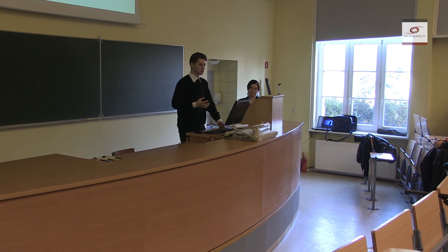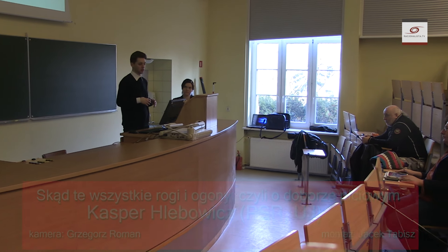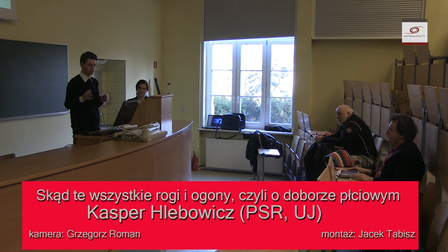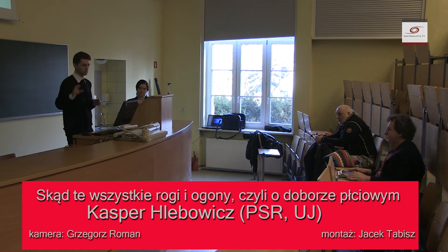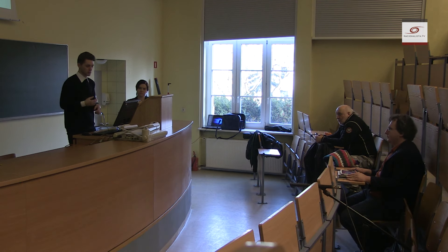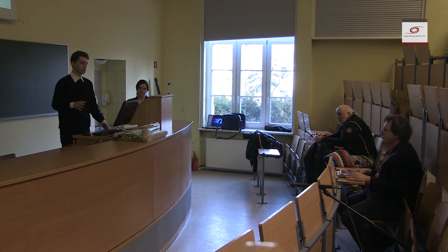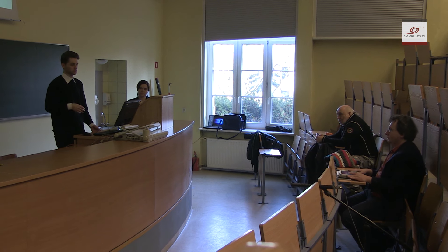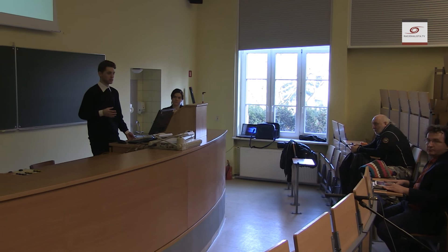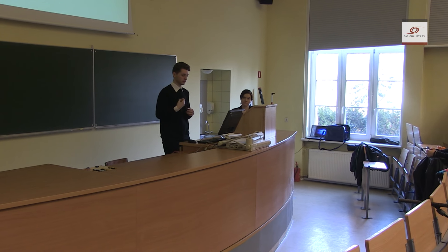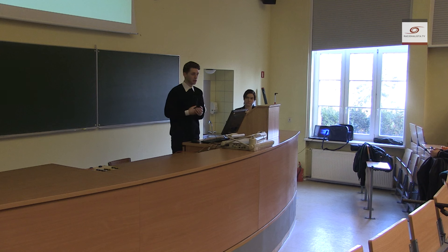Odpowiedź: Chciałem pokazać, że niezależnie od ilości pokarmu, ważny jest sposób jego ulokowania – pokarm może być rozproszony bądź skupiony w jednych miejscach. W przypadku tropików jest ta różnica, że mamy ogromną ilość nisz, które mogą zajmować organizmy, i to może powodować adaptację w różnych kierunkach. Natomiast w regionach subpolarnych i umiarkowanych tych nisz nie mamy tak dużo ze względu na mniejszą różnorodność.